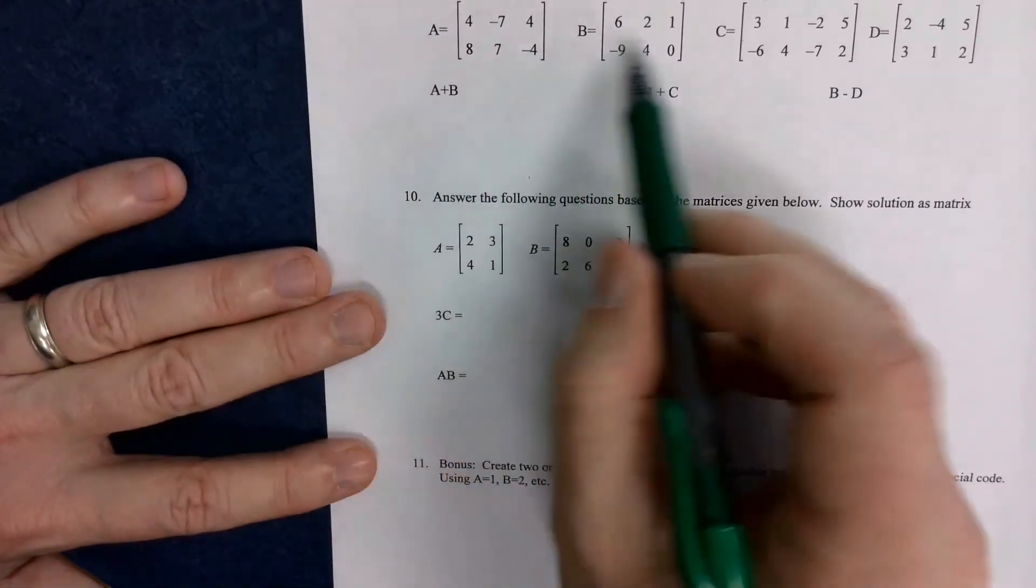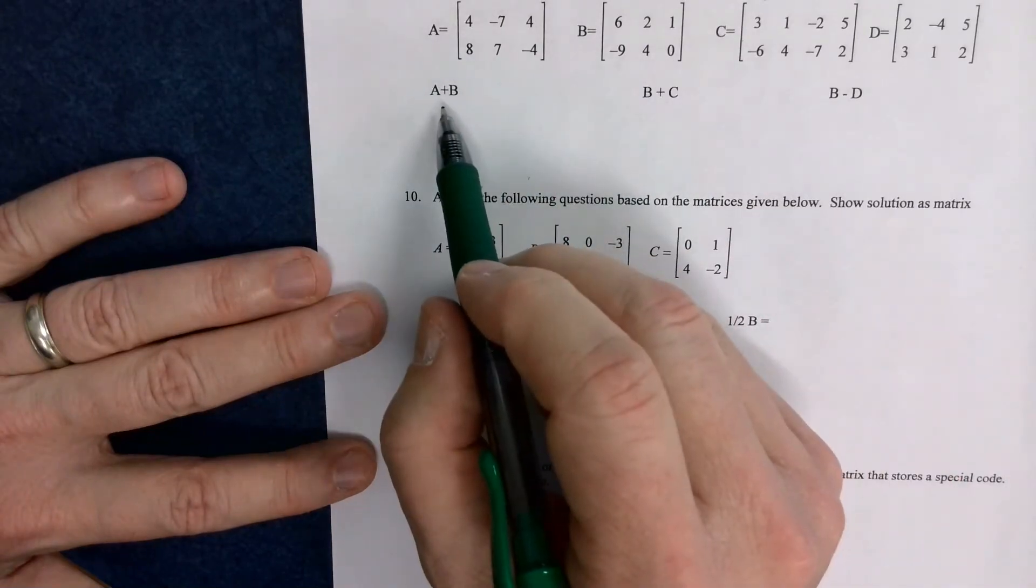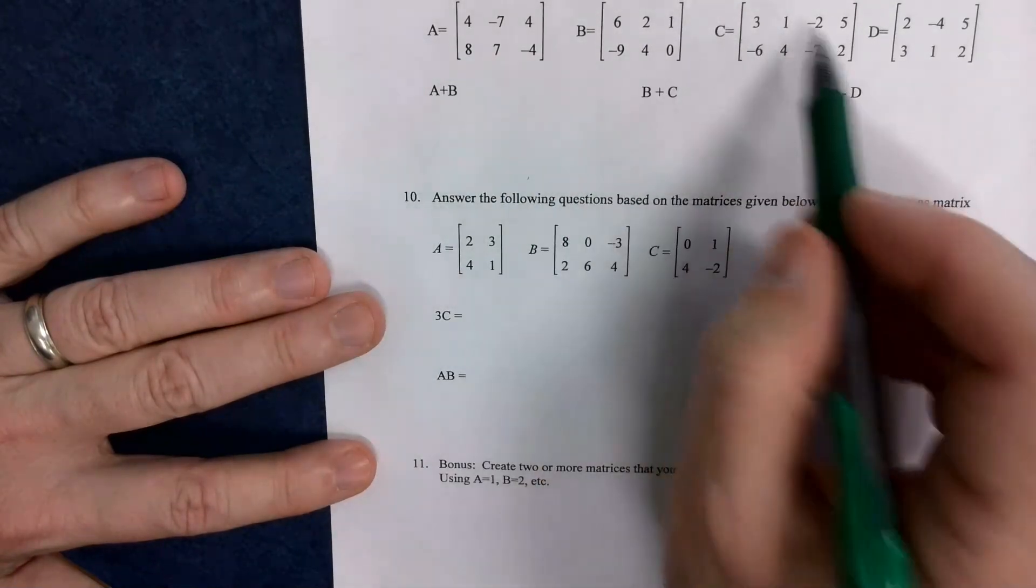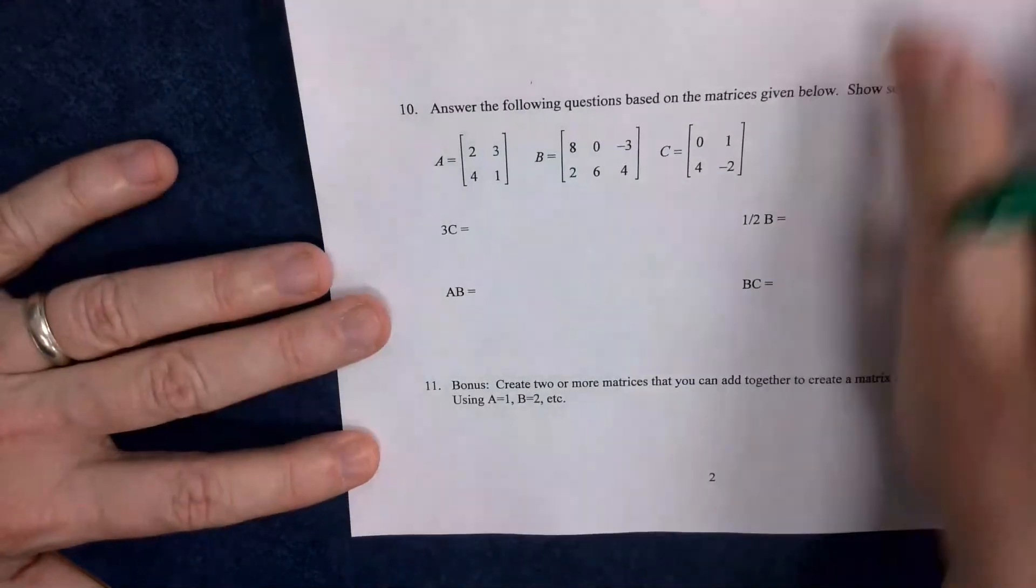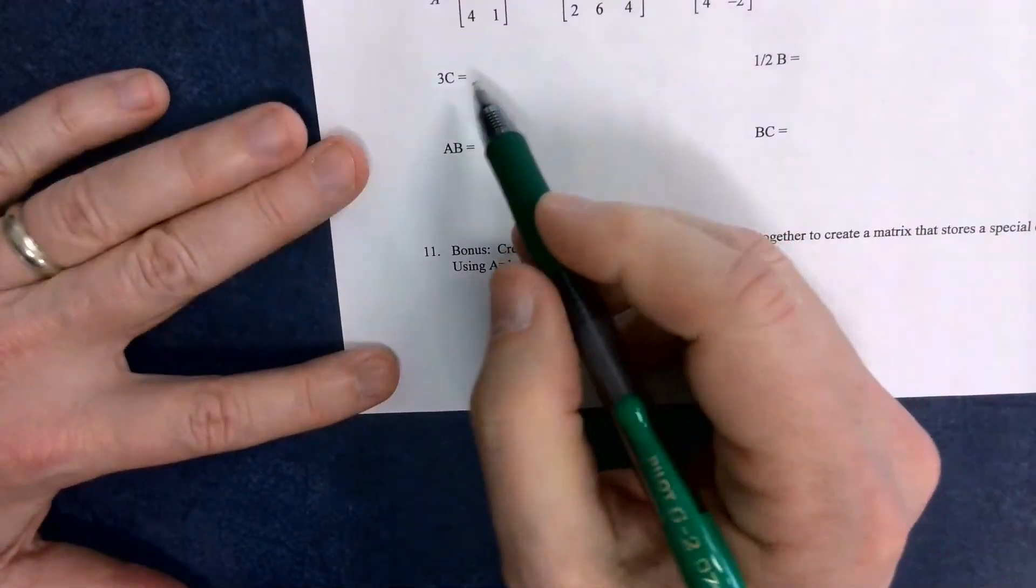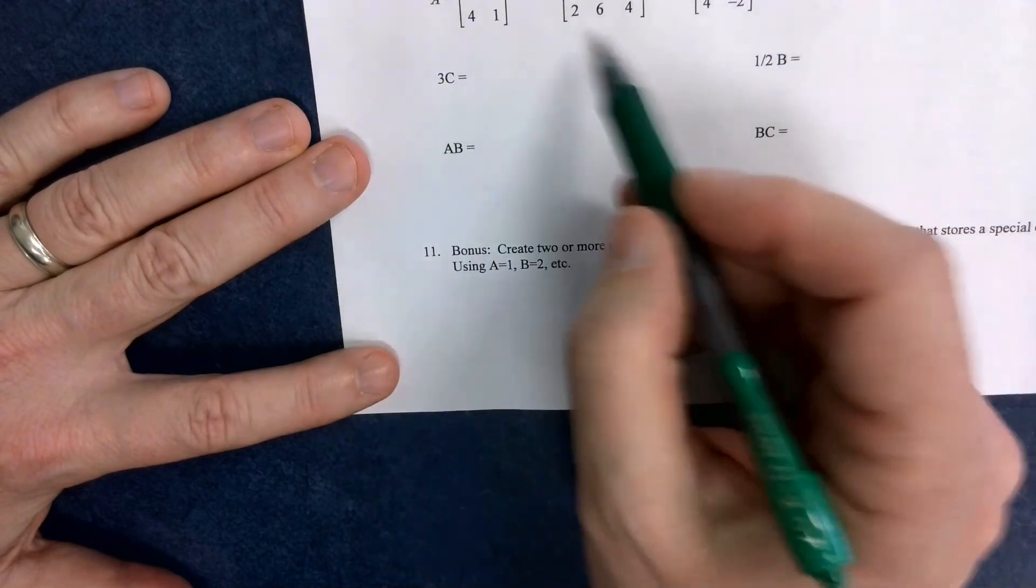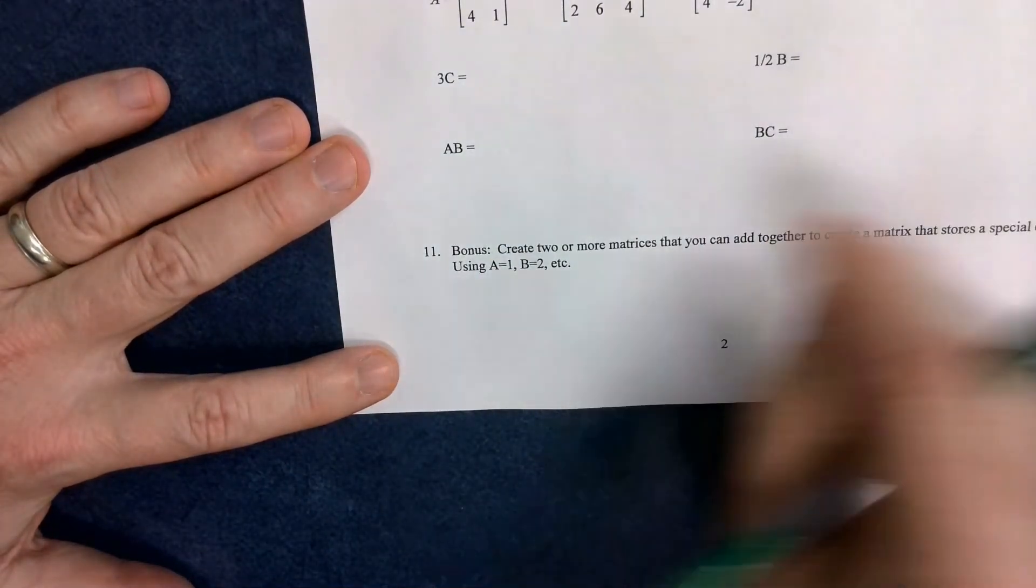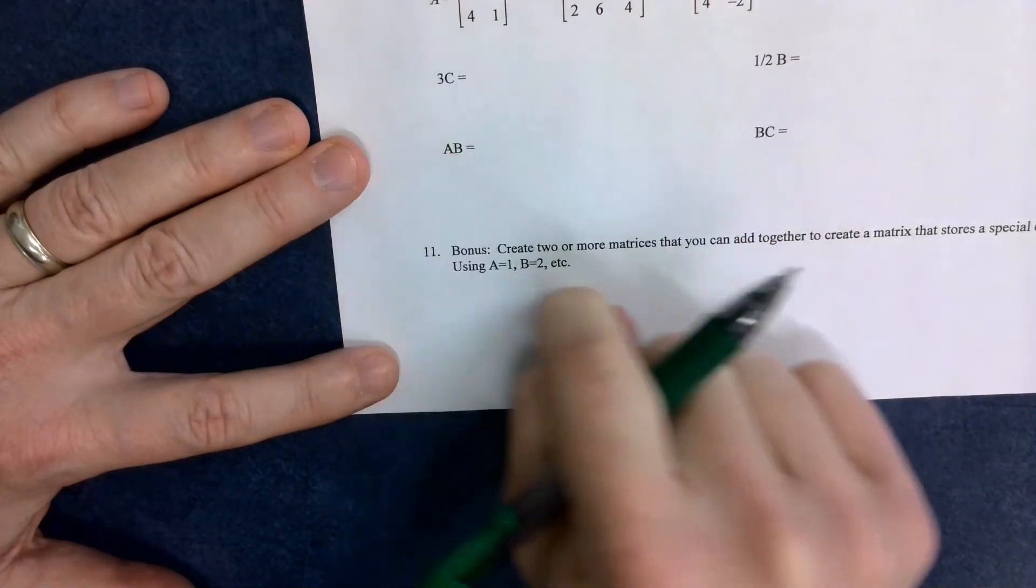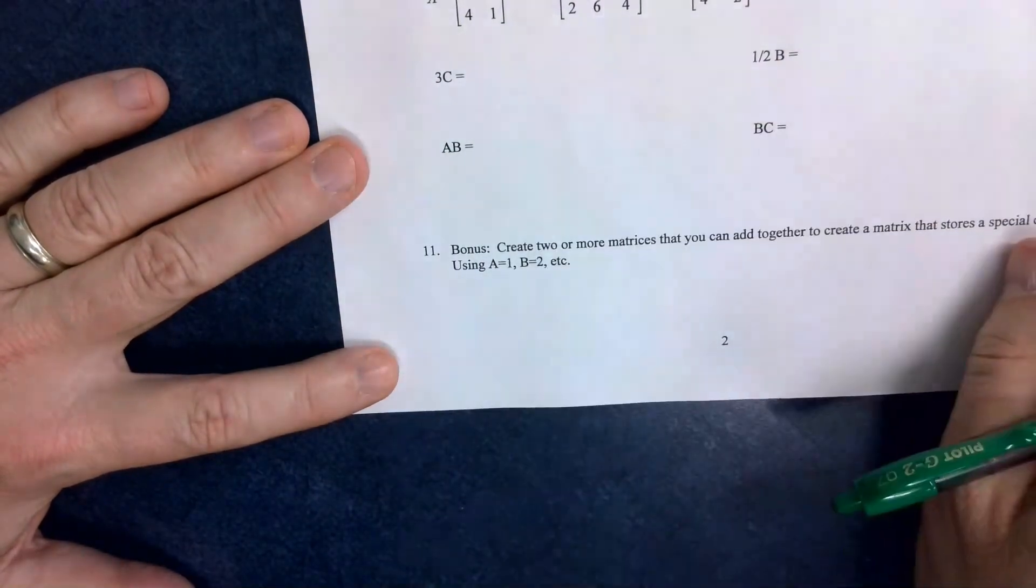Next, I've got some matrices A and B. We want to see if we can add them. B and C, can we add them? B minus D, can we subtract them? And then down here, can I do 3 times C? What does that mean? Can I do half B? What does that mean? Can I do A times B? And can I do B times C?